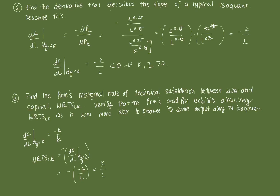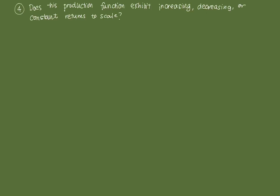To prove the production function exhibits diminishing MRTS as the firm uses more labor, we take the partial derivative of MRTSLK with respect to L. Since MRTSLK equals K over L, this derivative equals negative K over L squared, which is less than 0 for all K > 0 and L > 0. That proves diminishing marginal rate of technical substitution.